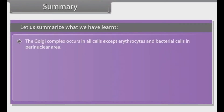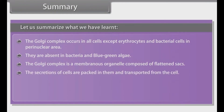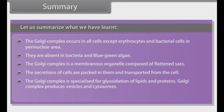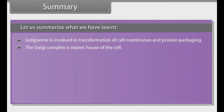The Golgi complex occurs in all cells except erythrocytes and bacterial cells, in the perinuclear area. It is absent in bacteria and blue-green algae. The Golgi complex is a membranous organelle composed of flattened sacs; the secretions of cells are packed in them and transported from the cell. The Golgi complex is specialized for glycosylation of lipids and proteins, produces vesicles and lysosomes, and is involved in transformation of cell membranes and protein packaging. The Golgi complex is the export house of the cell.